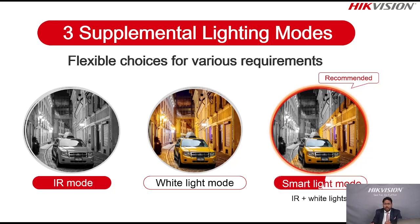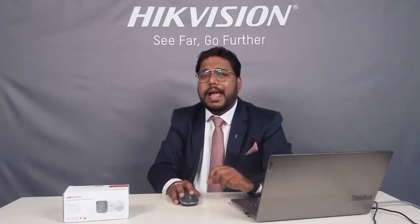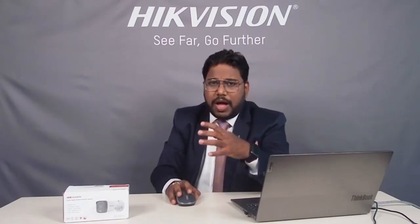If you don't want white light enabled continuously, you can turn off that mode and use the camera as a default night vision camera. The third and most interesting setting is the Smart Light mode — IR plus white light. In general scenarios the camera operates in IR, but whenever any activity is detected, the camera will start its white light, providing smart night vision.